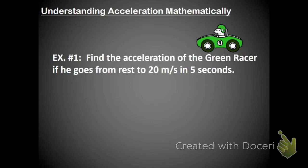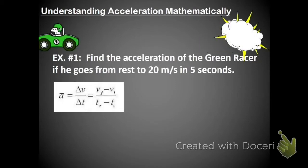First, find the acceleration of the green racer if he goes from rest to 20 meters per second in 5 seconds. So recall that the equation for acceleration is a change in velocity over time, so we need to figure out how much the green racer's velocity has changed and how much time it took. That's pretty straightforward from this example.